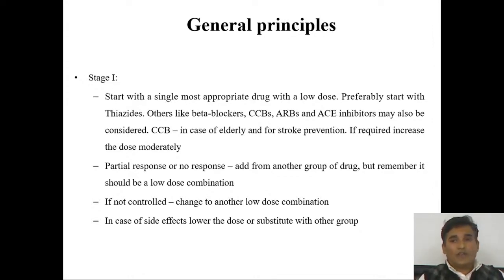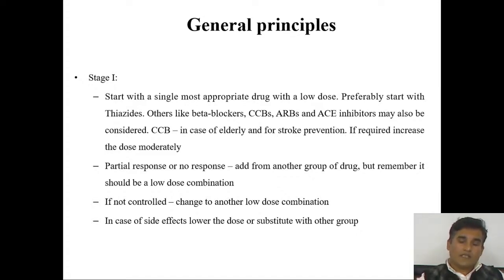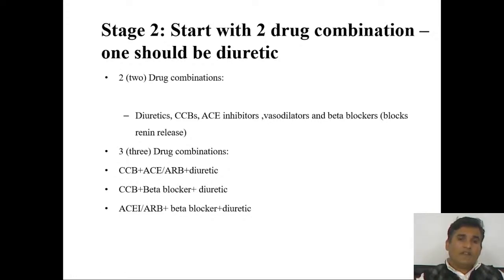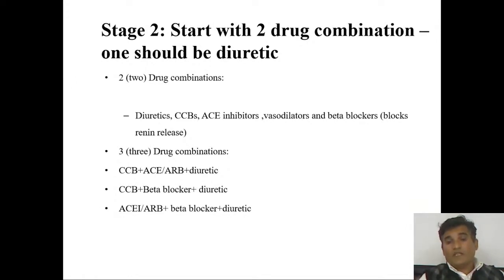If blood pressure is not controlled with one drug, use low doses of more than one drug with different mechanisms of action. Two-drug combinations per the ACD guideline: ACE inhibitor or angiotensin blocker with diuretics. If still not controlled, three-drug combinations: calcium channel blocker plus ACE inhibitor or ARB plus diuretics, or calcium channel blocker plus beta blocker plus diuretics, or ACE inhibitor plus angiotensin blocker plus beta blocker.